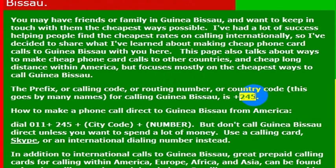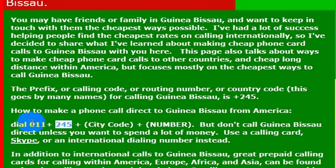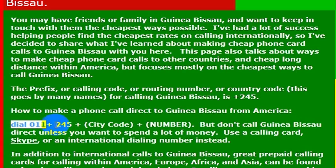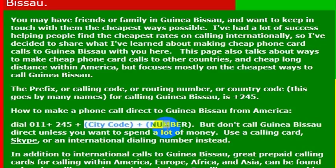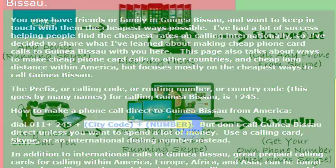You would dial 011, then the country code 245. This has to be from an internationally enabled phone in the United States. You dial 011, then the country code of 245, then you dial whatever number you are trying to reach.